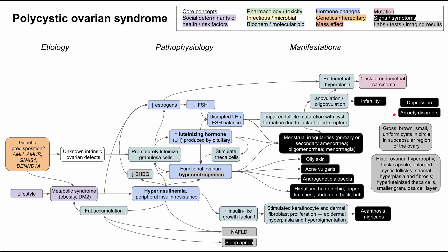A quick note on the pathology findings in PCOS. On gross pathology, you'll have brown small uniform cysts in a circular pattern around the subcapsular region of the ovary. On histopathology, when you look under the microscope, you'll see ovarian hypertrophy, a thick capsule, enlarged cystic follicles, stromal hyperplasia and fibrosis, and hyperluteinized theca cells with smaller granulosa cells — which matches the disrupted LH-FSH balance.